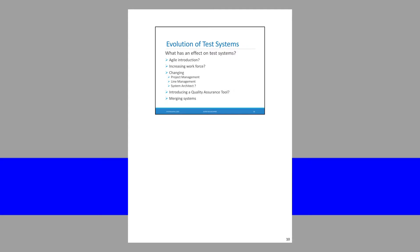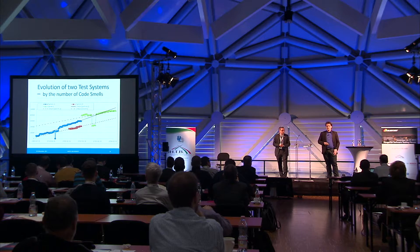And please don't forget, we are speaking about huge test systems. So the next question is: what would be the evolution of test systems? What has effects on test systems? When you introduce agile, does it have an effect? When you increase your workforce? When you change your management, project management, line management, or system architect? When you introduce quality assurance tools? Or when you merge systems — what happens?